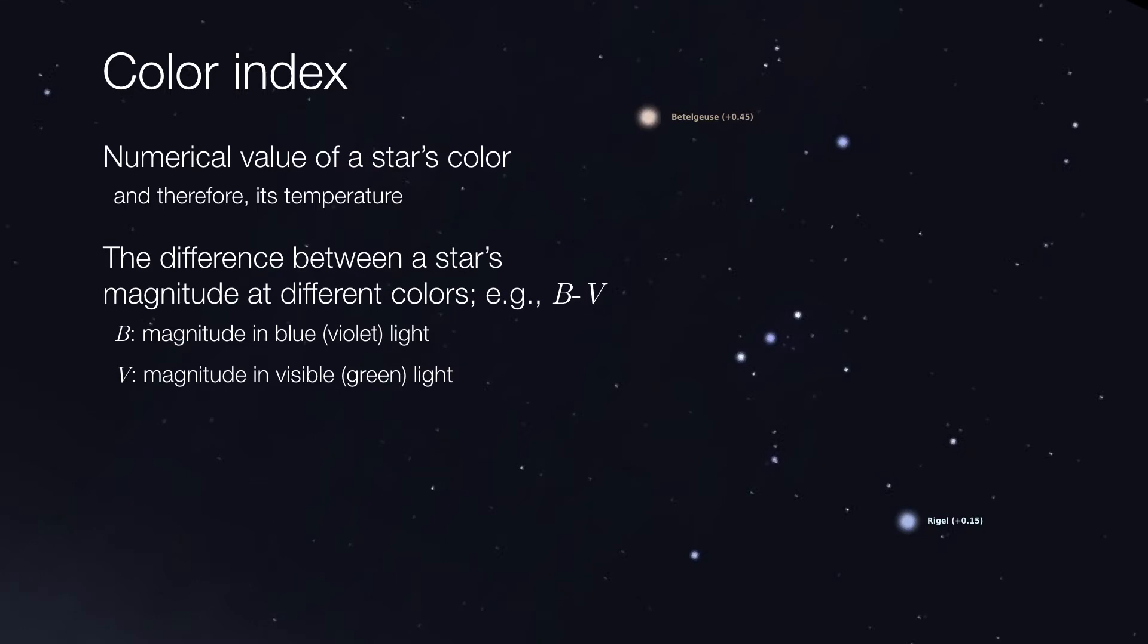Color index is a way of assigning a numerical value to characterize the color of a star. And we do this by comparing the magnitudes of stars using different filters. Typically, it will be the blue filter versus the visible light filter, which is essentially a green or yellowish green light, which is right in the middle of the visible part of the spectrum.